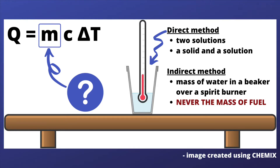But what about the direct method? The direct method can be recognized in the exam questions because you've got either two solutions being added together in a polystyrene cup, or perhaps a solid like a carbonate being added to a solution of something like an acid in a polystyrene cup. When we've got a scenario like this, the new guidance is that we use the mass of the final solution as our value of m.